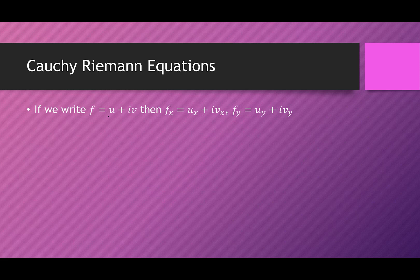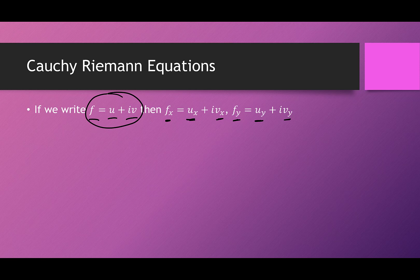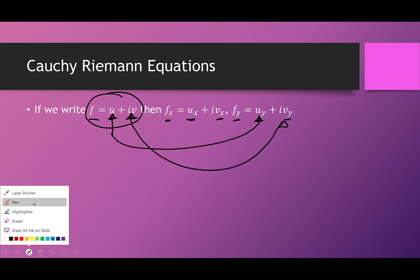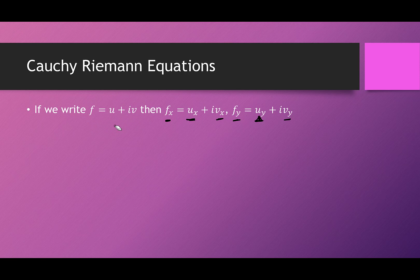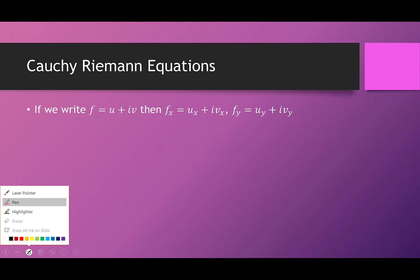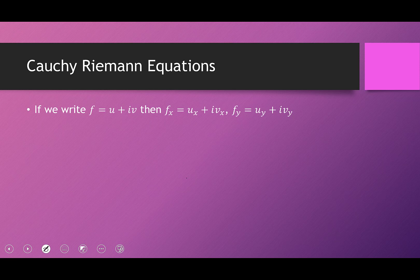With this new notation, writing F as U plus iV, the partial of F with respect to X is just U sub X plus i V sub X, because derivatives distribute over a sum. Similarly, the partial of F with respect to Y is U sub Y plus i V sub Y. We can now come up with equations that mimic those equations from our result.